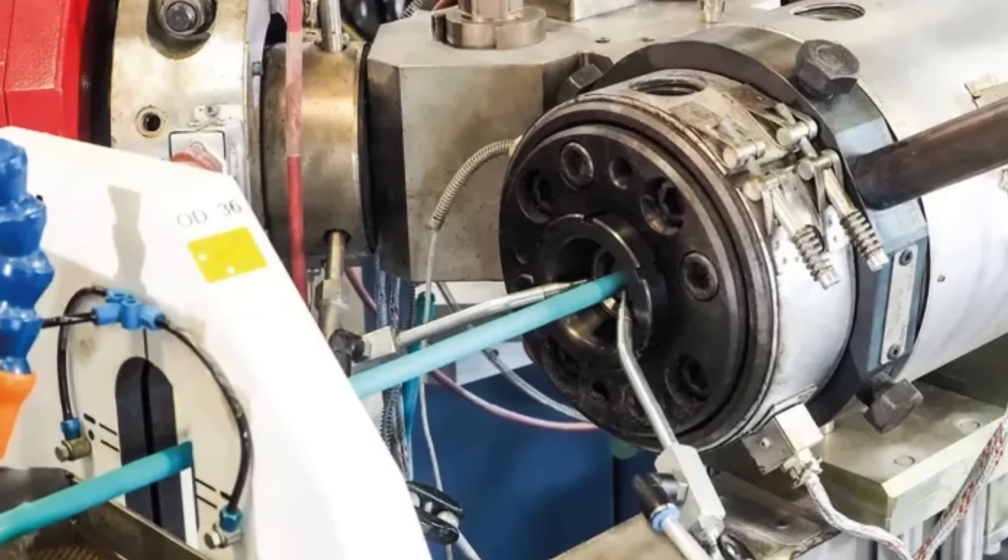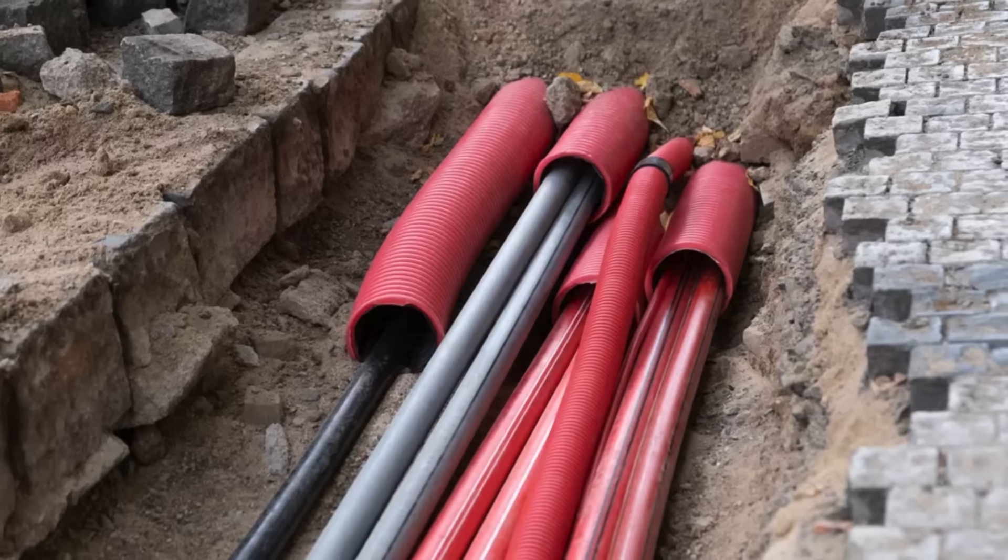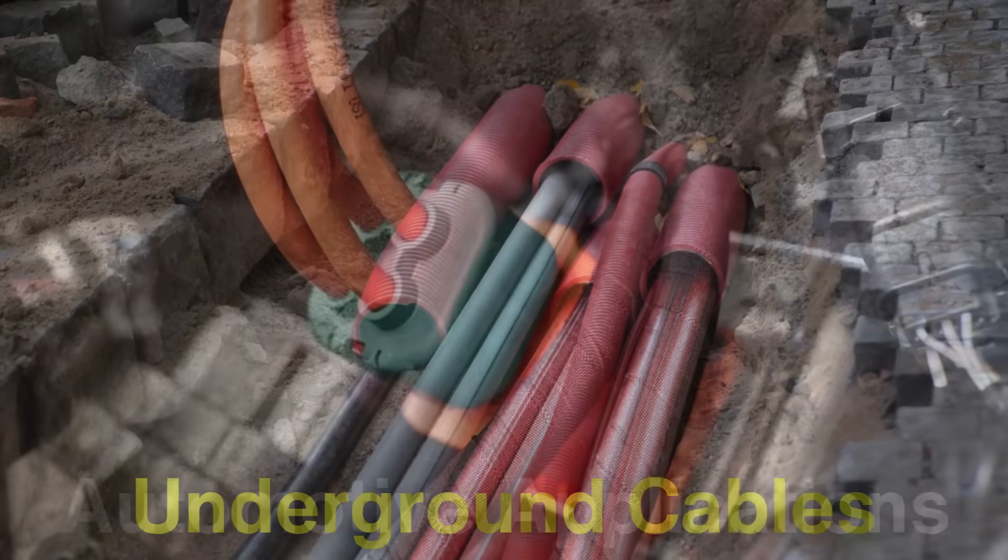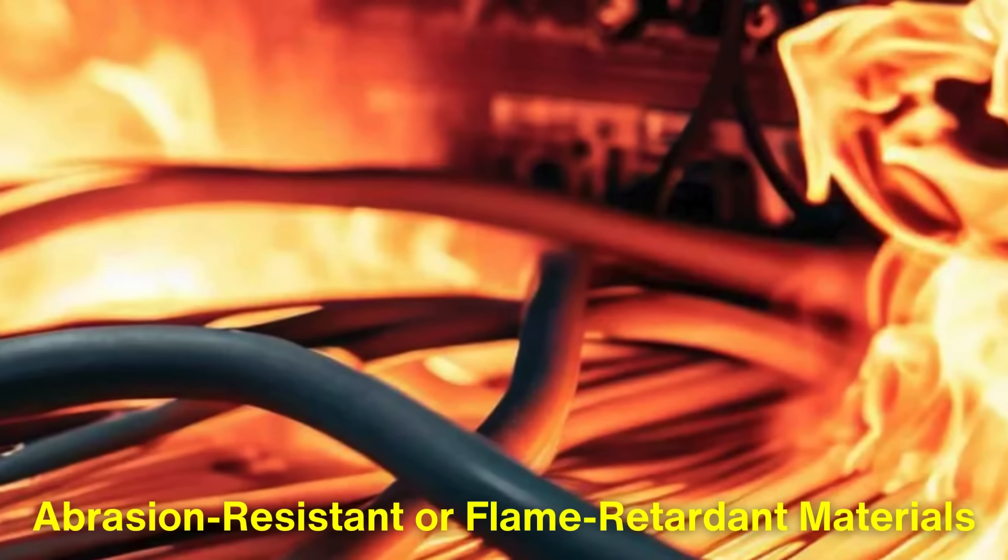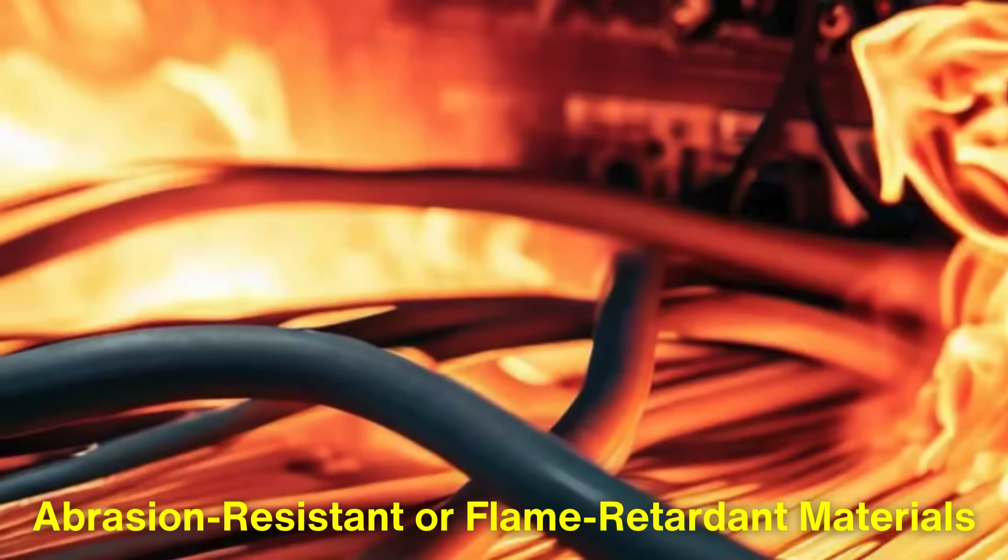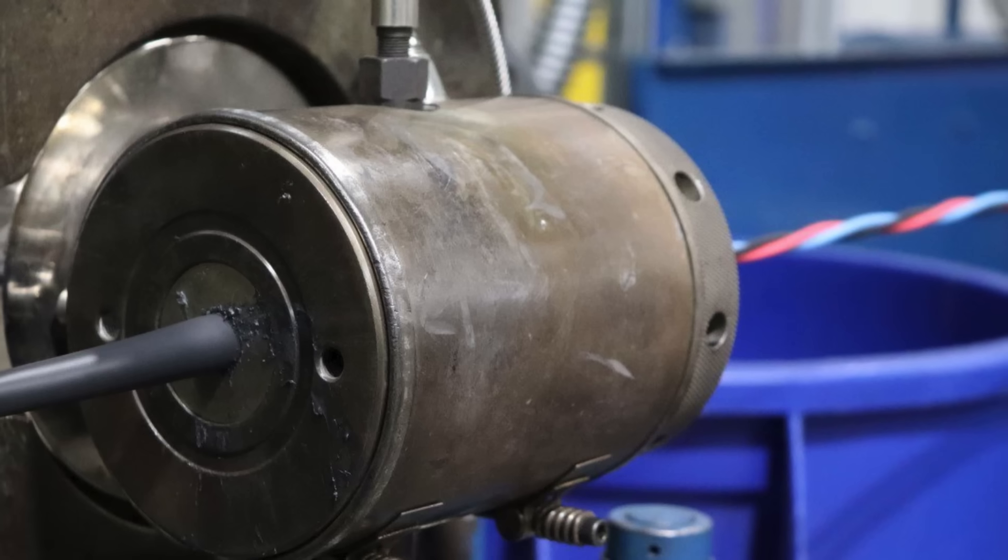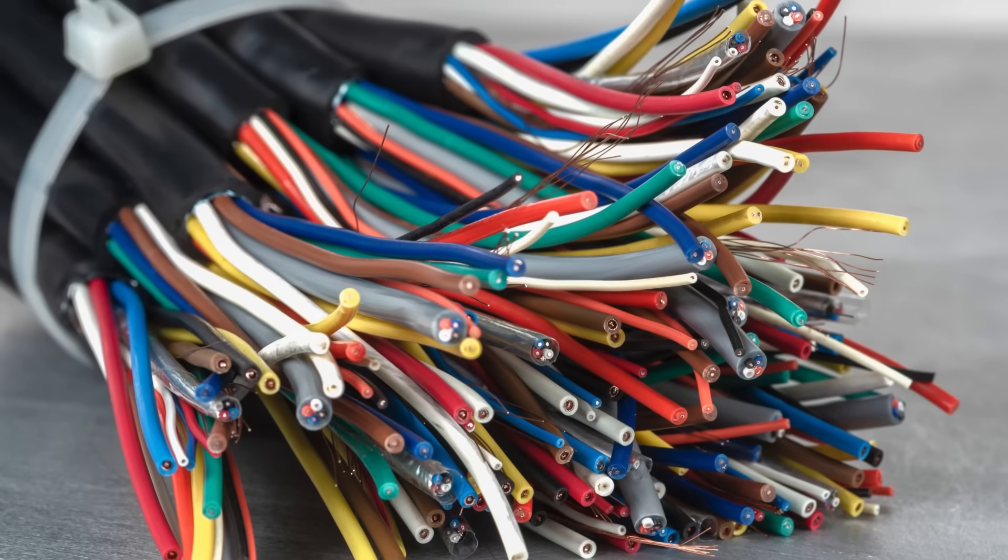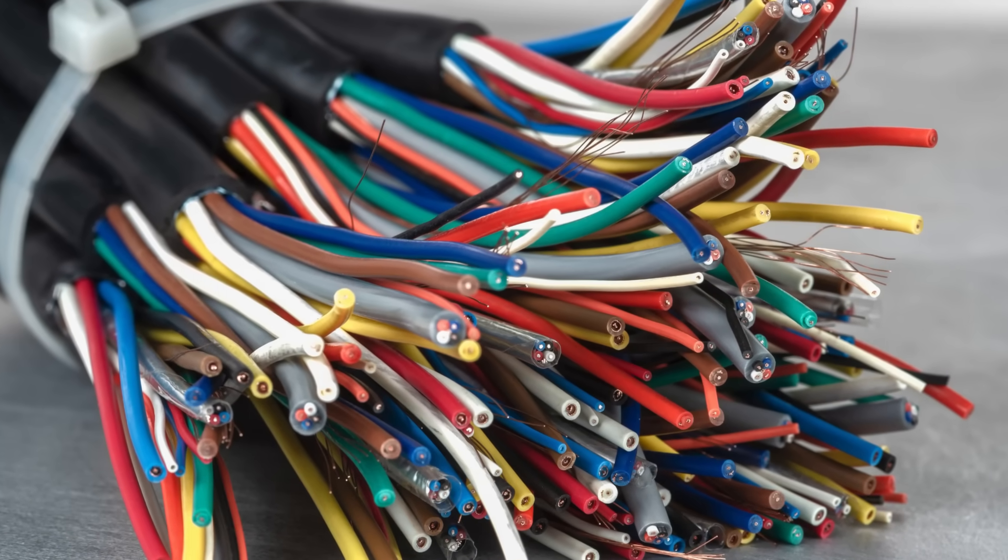In some cases, additional layers of insulation or protective sheathing may be added. For example, wires used in harsh environments, like underground cables or automotive applications, might have extra layers of abrasion-resistant or flame-retardant materials. These layers are applied using similar extrusion techniques, with each layer tailored to meet specific performance criteria. Multi-layered wires are often subjected to additional testing to ensure the layers are bonded securely and can withstand the rigors of their intended use.